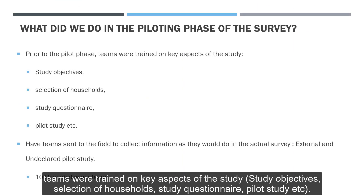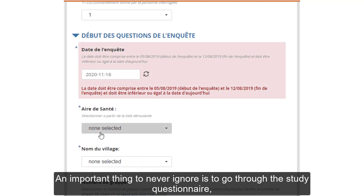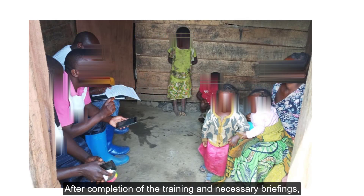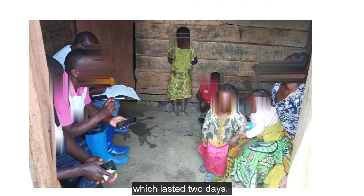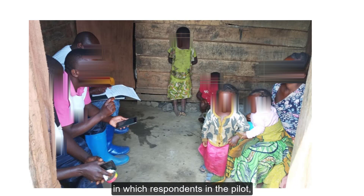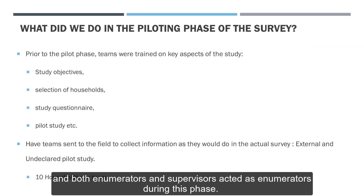Prior to the pilot phase, teams were trained on key aspects of the study: study objectives, selection of households, the study questionnaire, pilot study, etc. An important thing to never ignore is to go through the study questionnaire question by question with the teams — it is a tedious but quite rewarding exercise. After completion of the training and necessary briefings, which lasted 2 days, teams were sent to the field to collect information as they would in an actual survey. We did an external and undeclared pilot study in which respondents in the pilot were not included in the main survey analysis and were not told the pilot was a test. Each team was asked to interview at least 10 households, and both enumerators and supervisors acted as enumerators during this phase.